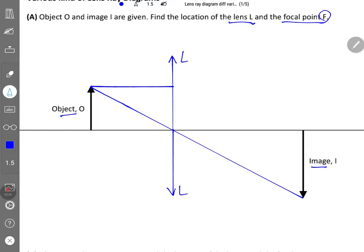So another reference point that you can have is the tip of the image. As you know, whatever ray that comes from the tip of the object will all go to the tip of the image. So this intersection with the principal axis here will be the focal point, and there you have it.